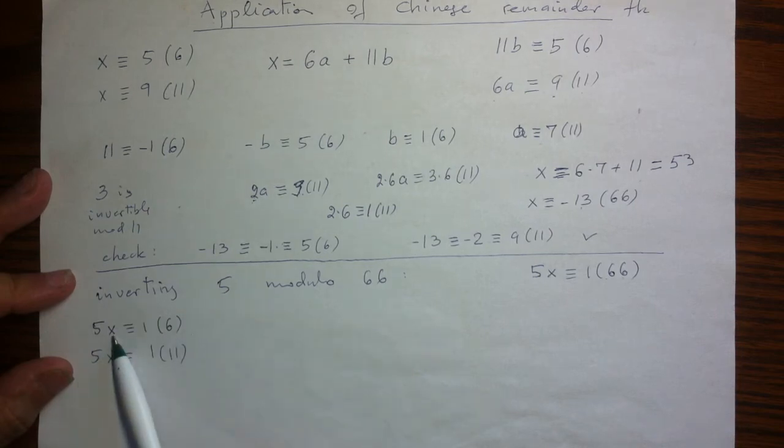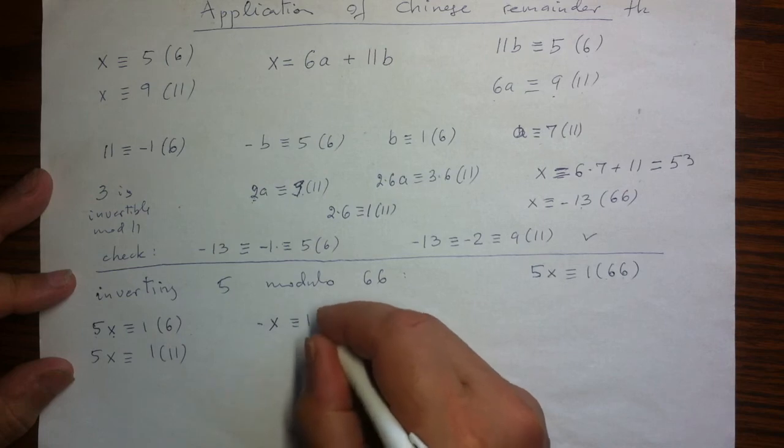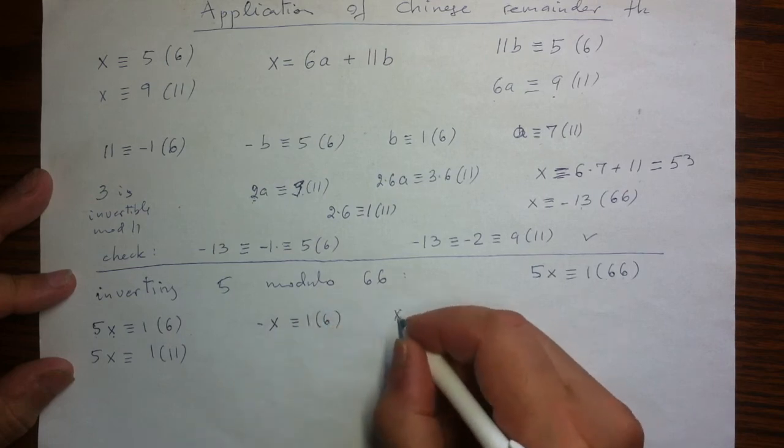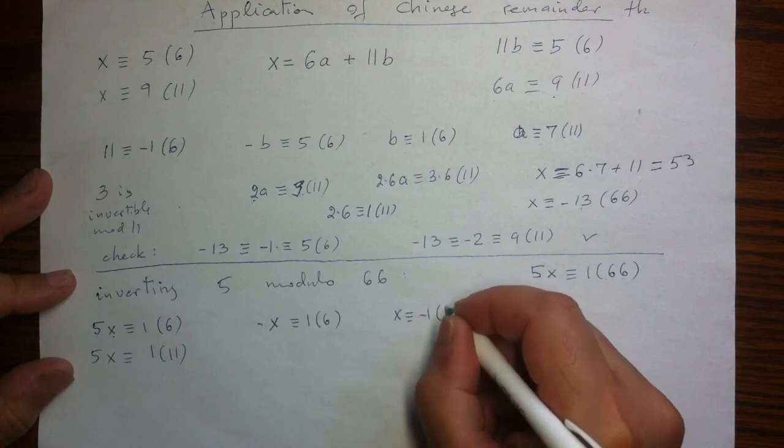So what do I know about this x mod 6? Well, I have to solve this congruence 5 mod 6 is negative 1. So I have negative x congruent to 1 mod 6. I have x being congruent to negative 1, which is the same as 5.